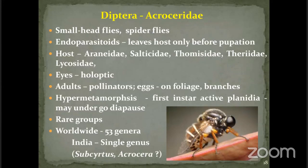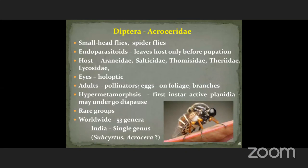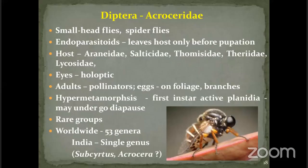Their internal development makes these groups vulnerable to attack by other predators. When a predatory wasp like Pompilidae, Sphecidae, or Crabronidae captures a spider, they won't be aware of the parasitoid developing within, making Acroceridae very vulnerable. Once the spider is killed, the parasitoid developing inside the spider also gets killed.